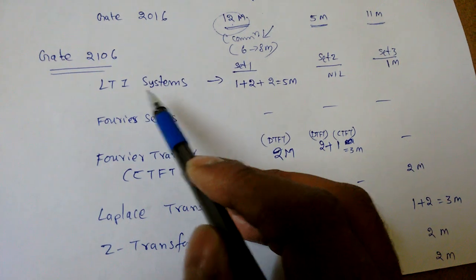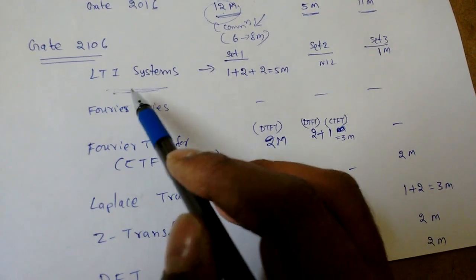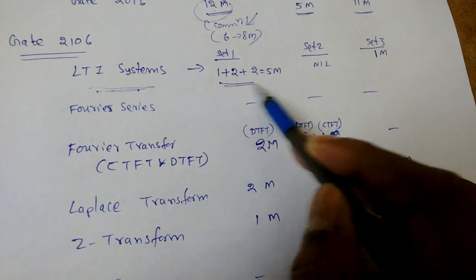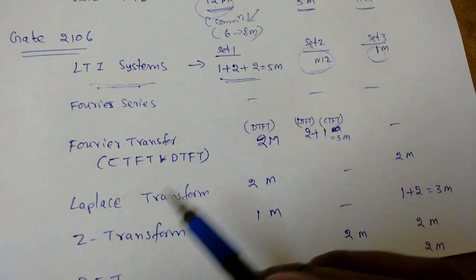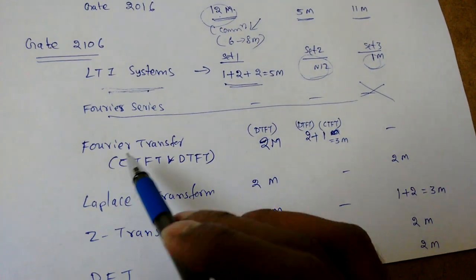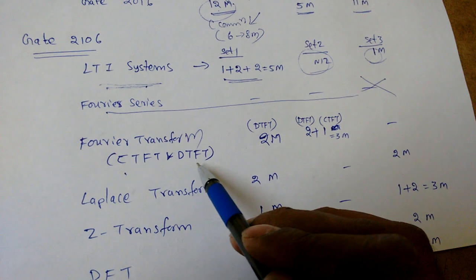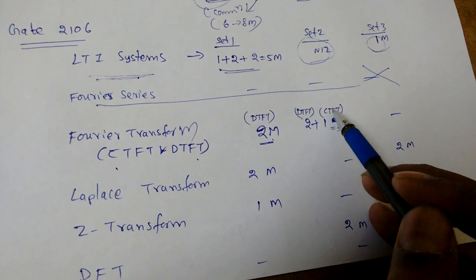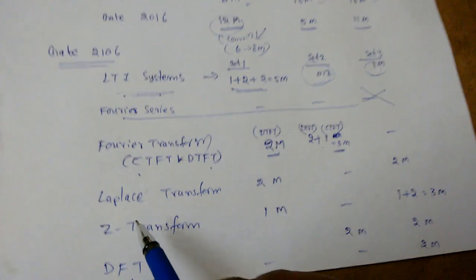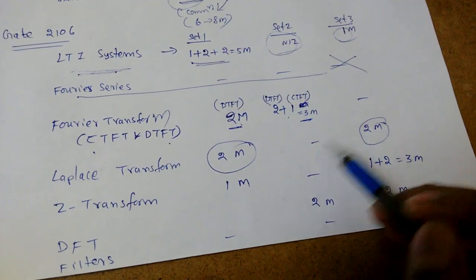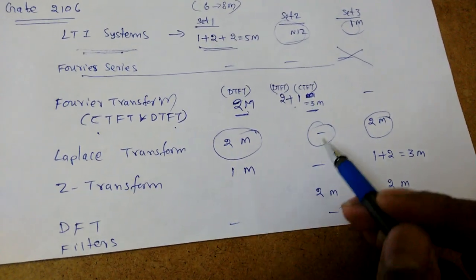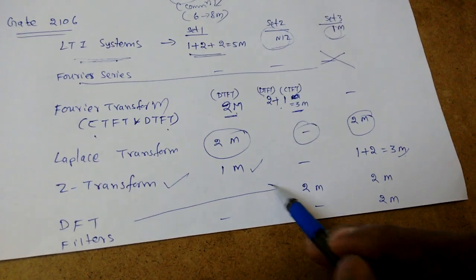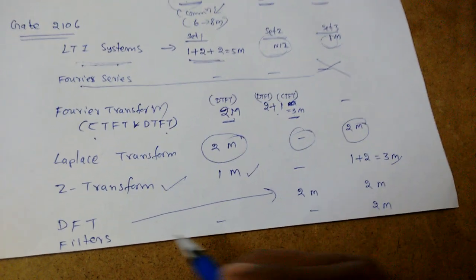In GATE 2016, from basic signals we got no questions. From LTI systems — Set 1 five marks, Set 2 no questions, Set 3 one mark. Fourier series had no marks. For continuous-time and discrete-time Fourier transforms — Set 1 two marks from DTFT, Set 2 two marks from DTFT plus one mark from continuous Fourier transform. For Laplace transform — Set 1 two marks, Set 3 two marks, Set 2 no questions. For Z-transform — Set 1 one mark, Sets 2 and 3 three marks.